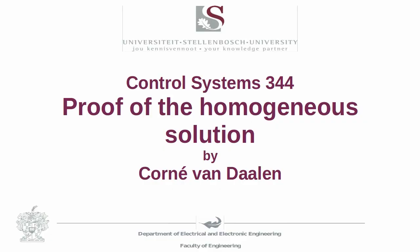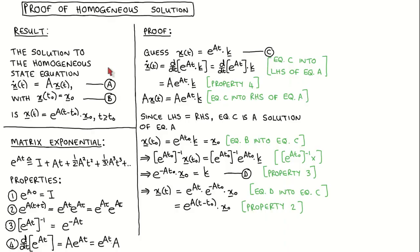We have previously looked at the solution to the homogeneous state equation and calculated the state transition matrix using the inverse Laplace transform method. In this video we prove these two results. The homogeneous state equation is given here, which is the normal state equation but without an input. The initial states at time t0 are given by the vector x0. The solution to the homogeneous equation is given by x equal to the matrix exponential of matrix A times t minus the initial time t0, times the initial state vector x0. This solution is valid for all time t from the initial time t0.